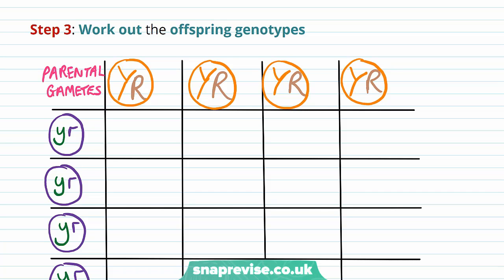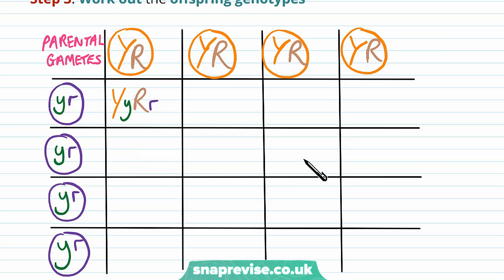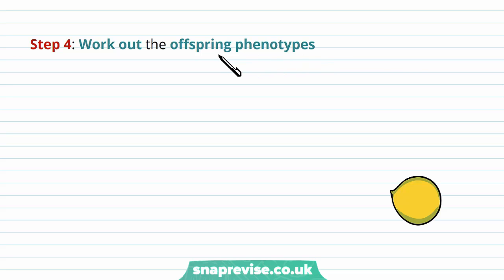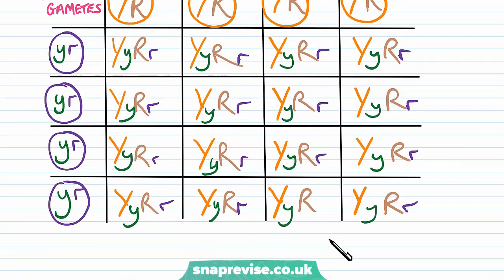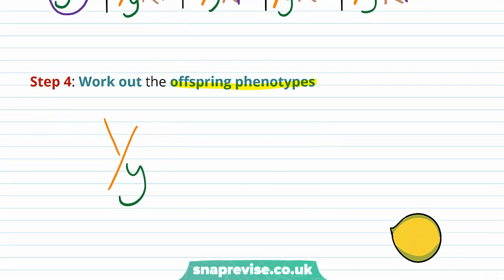We fuse the gametes together — remember gametes are written in circles. Placing them into the Punnett square rows and columns and fusing them, we always write genes in their own pairs so the Y's go together and the R's go together. Every single square gives the same result: capital Y, lowercase y, capital R, lowercase r — so all offspring are heterozygous for both genes.